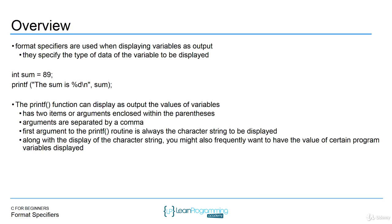If you look at printf and you're trying to analyze it, things that should stick out are: it has left and right parentheses, there's a comma in there, and there's quotations. Inside those parentheses are what's called function arguments — data that you're passing to the function. The arguments are separated by commas. The first argument for the printf function is everything inside the double quotes. The second argument would be that variable sum.